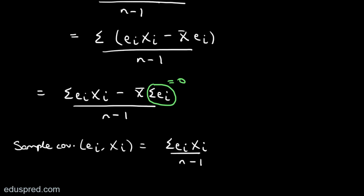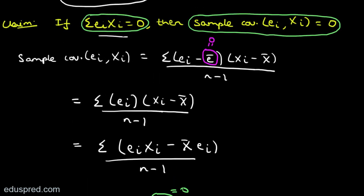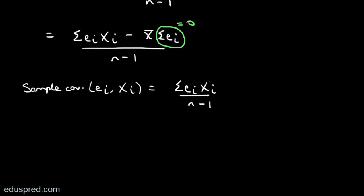Since the sample covariance between Eᵢ and Xᵢ equals summation EᵢXᵢ divided by N minus 1, if summation EᵢXᵢ equals 0, the numerator is 0 and therefore the sample covariance is also 0. This completes the proof of the additional claim for the fourth useful result.